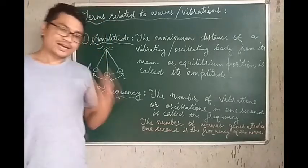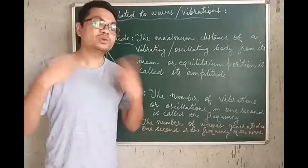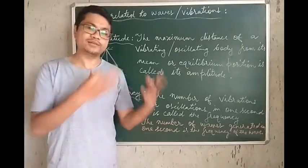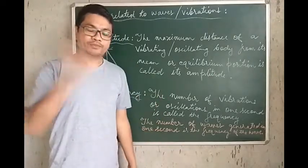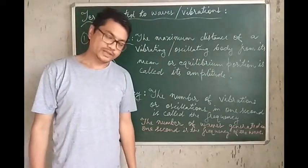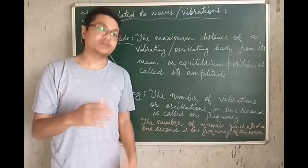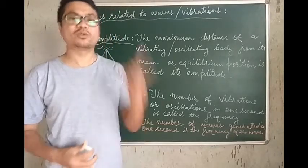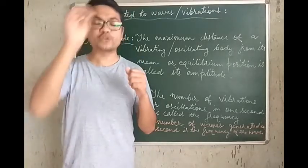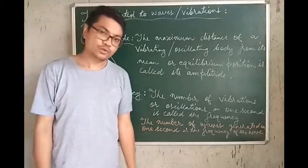Any vibrating body produces waves. One complete vibration is what generates one complete wave — what is generally referred to as the wavelength of the wave.